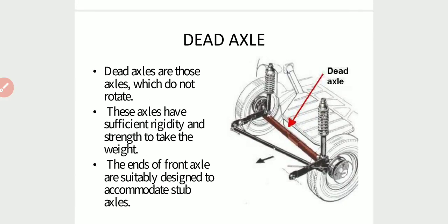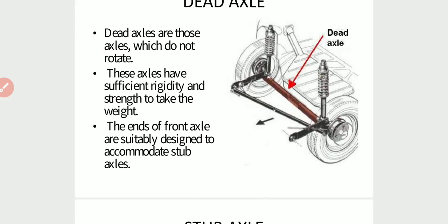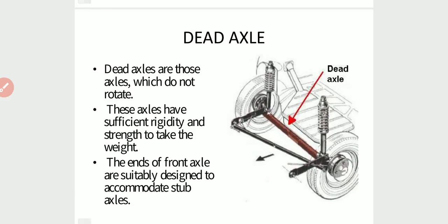Dead axles are those axles which do not rotate. These axles have sufficient rigidity and strength to take the weight. Dead axles only support the wheel and do not rotate. They must have highly sufficient rigidity and strength to stand the weight of the vehicle. The ends of the front axle are suitably designed to accommodate stub axles.